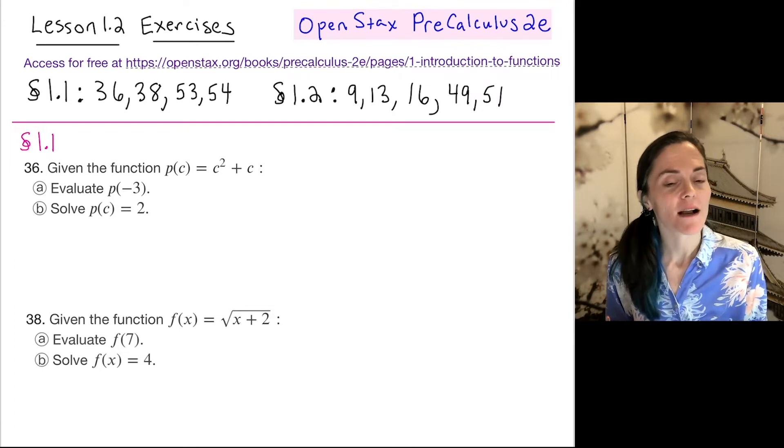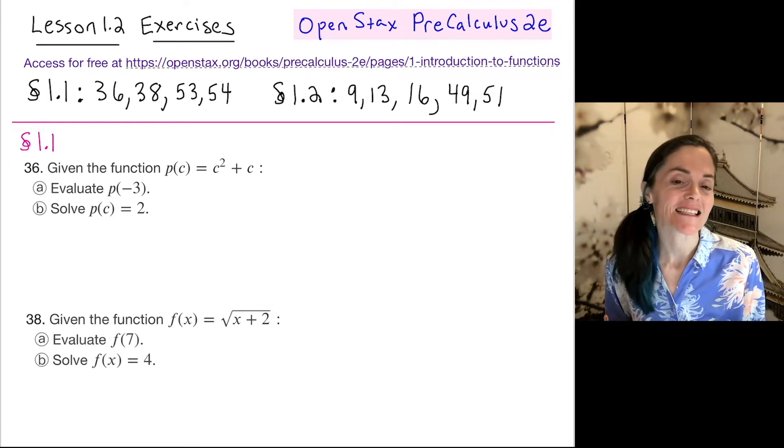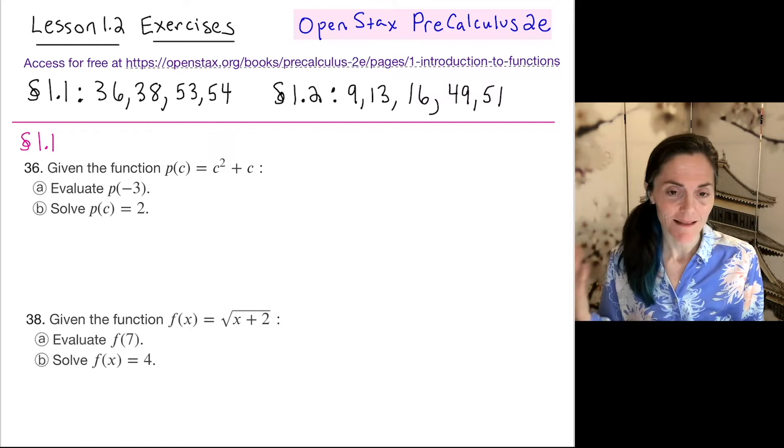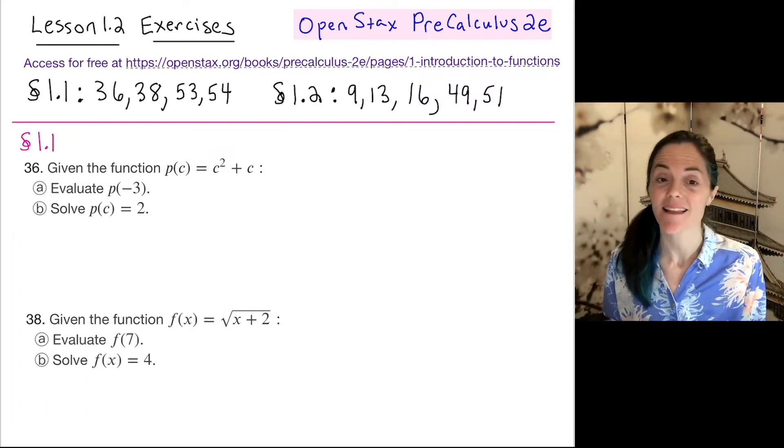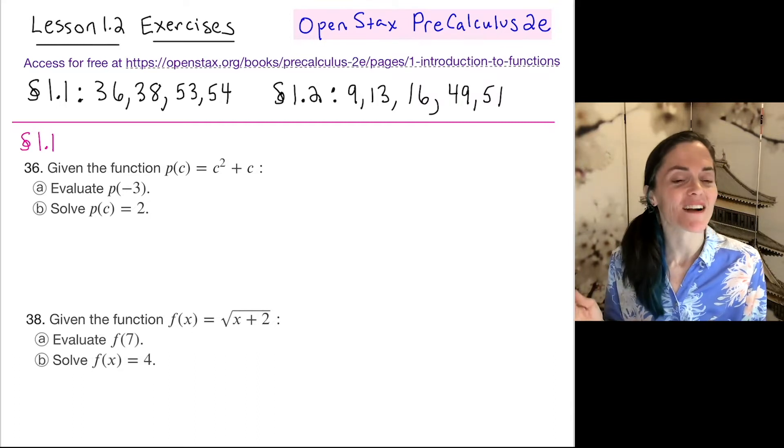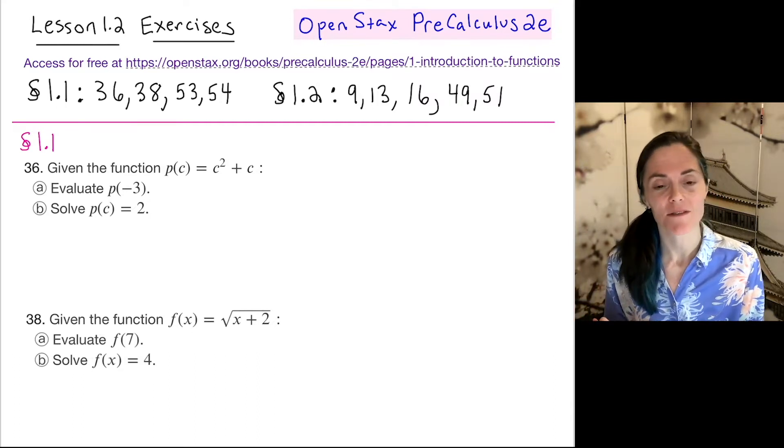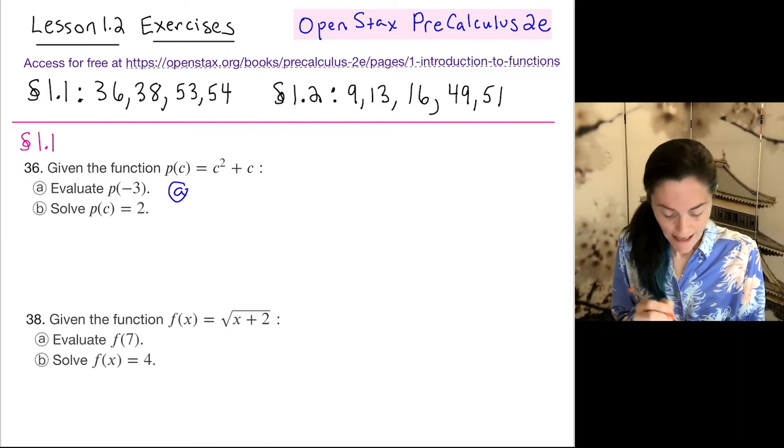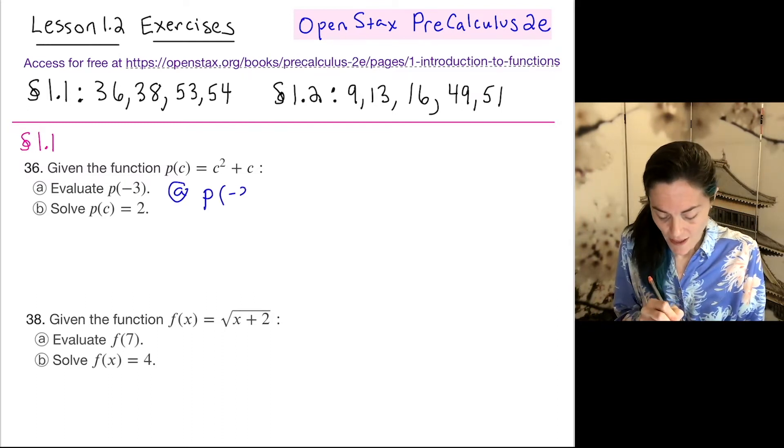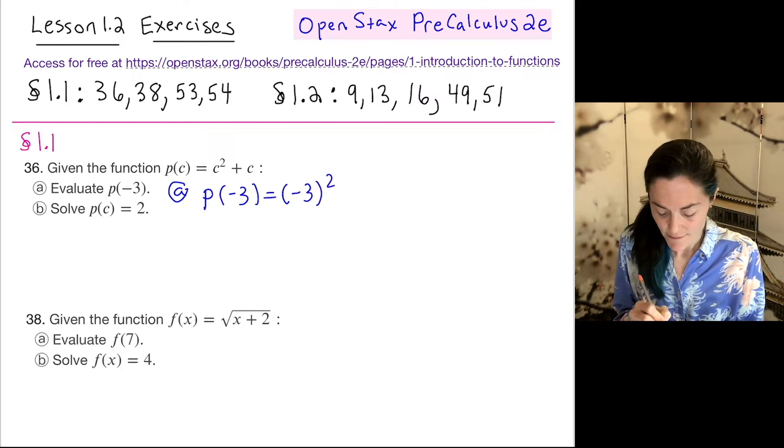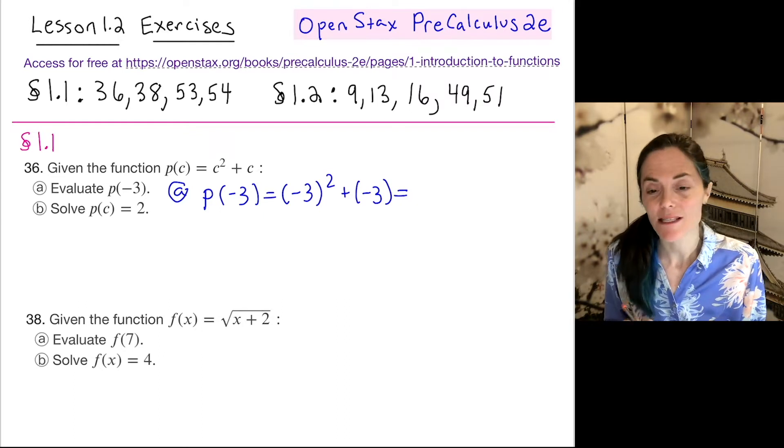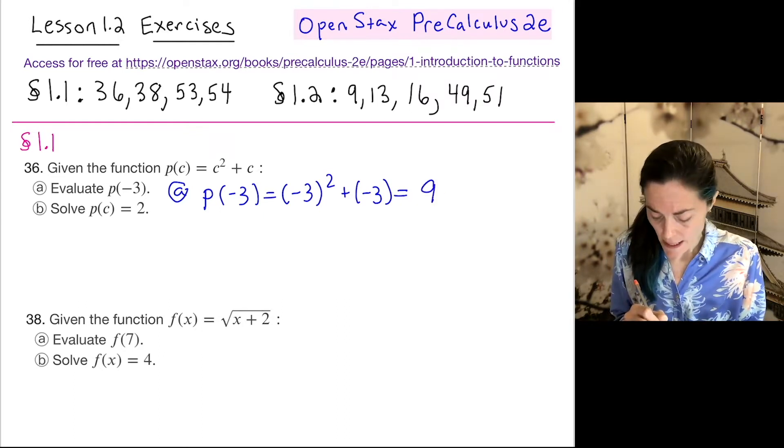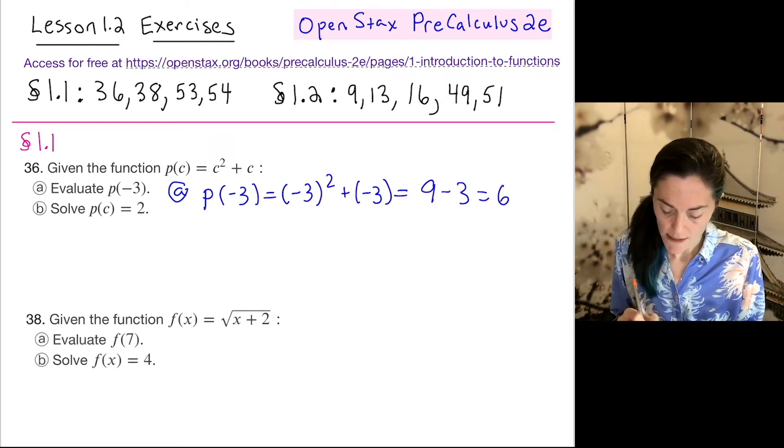Here we have a function p(c) which is c squared plus c. Here the independent variable is c. It's fine, remember, it's just a letter. We want to evaluate the function and also solve p(c) equals 2. We begin with part a. We evaluate p(-3). This is (-3) squared plus negative 3. Minus 3 squared is 9. So we have 9 minus 3. This is 6.